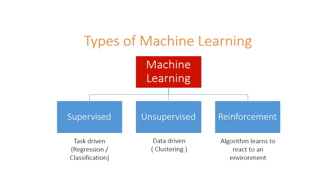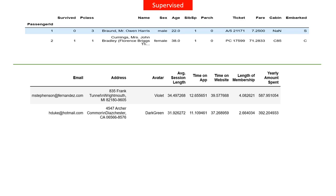There are three major types of machine learning, but we will not be talking about reinforced learning today. We will focus on supervised and unsupervised learning. Supervised learning is divided into two types: regression and classification. Unsupervised learning is majorly clustering.